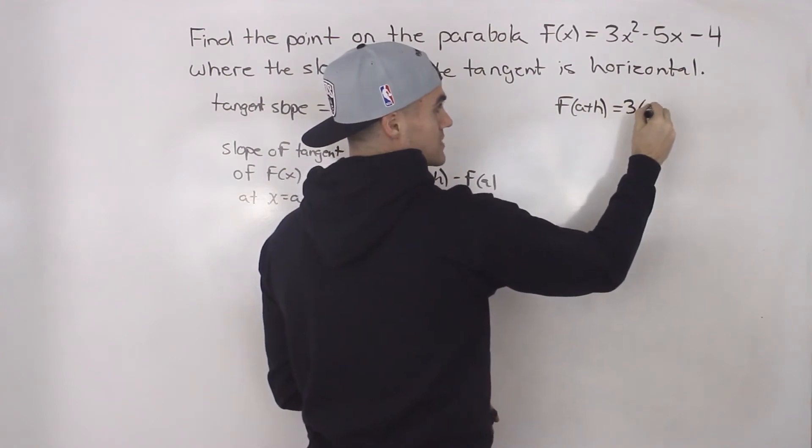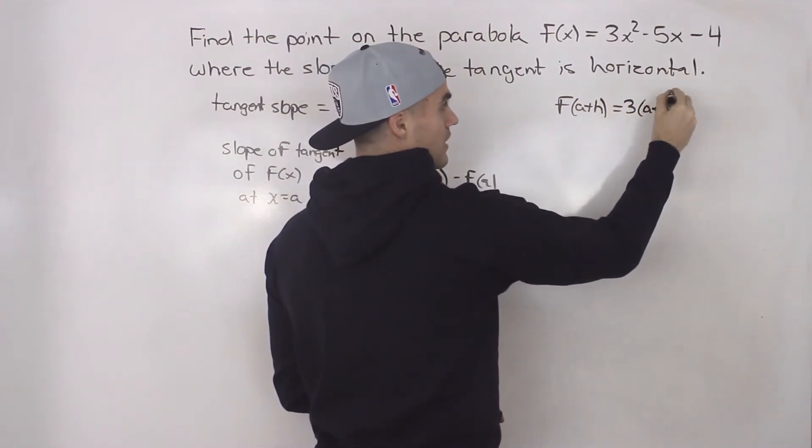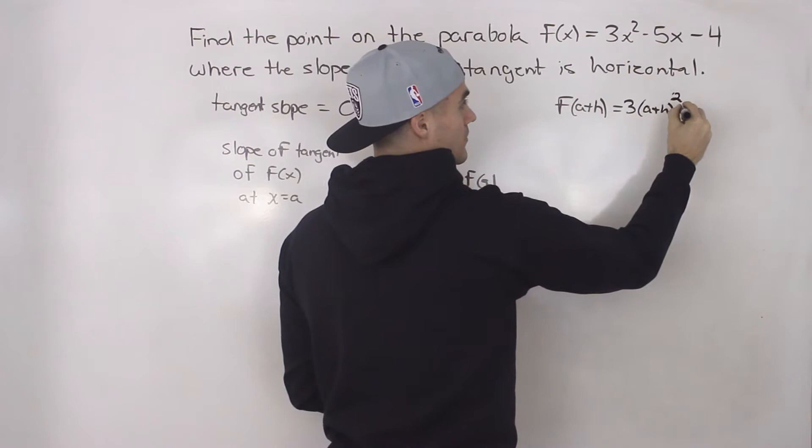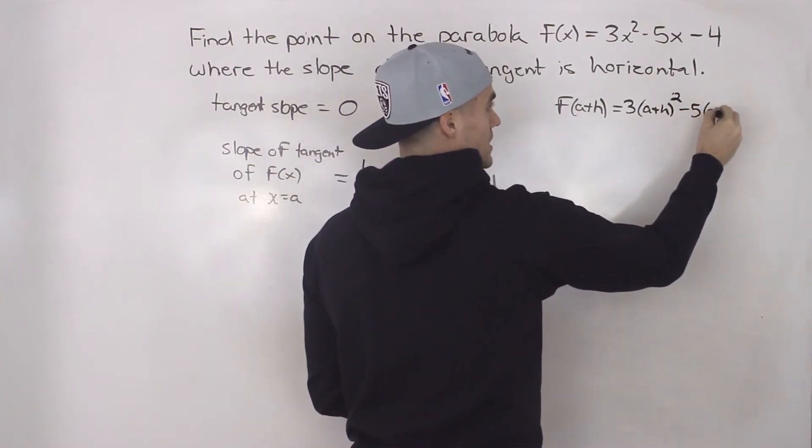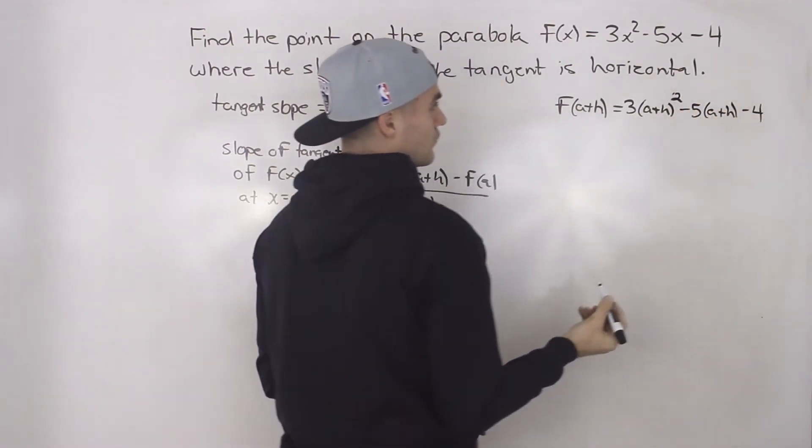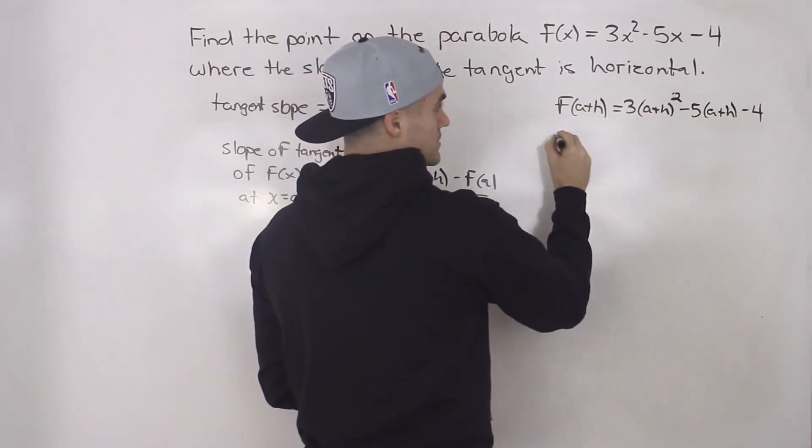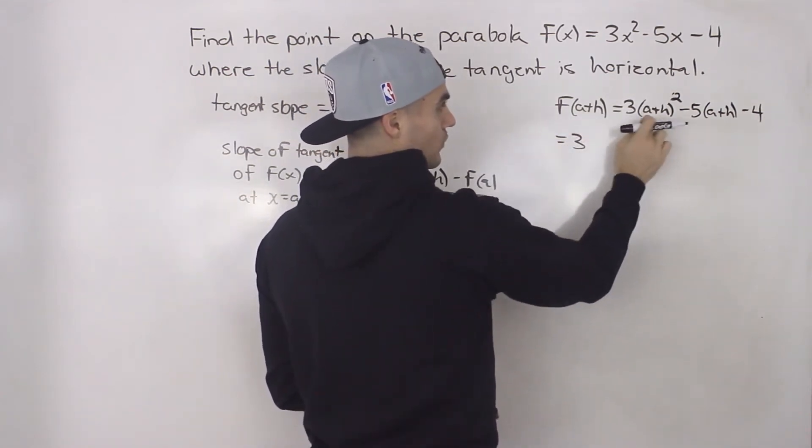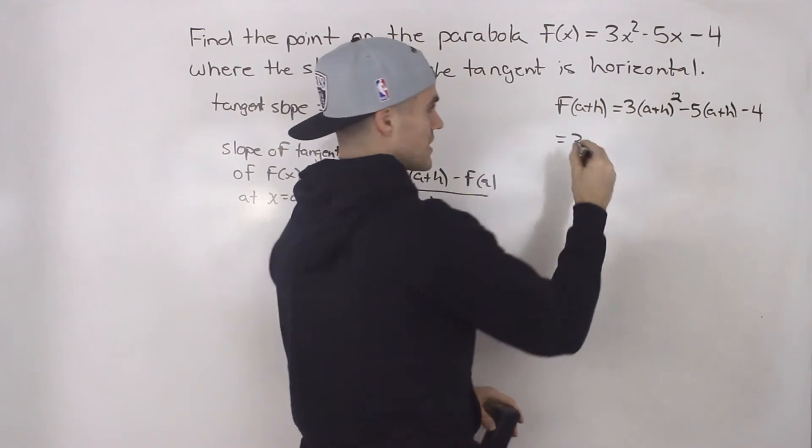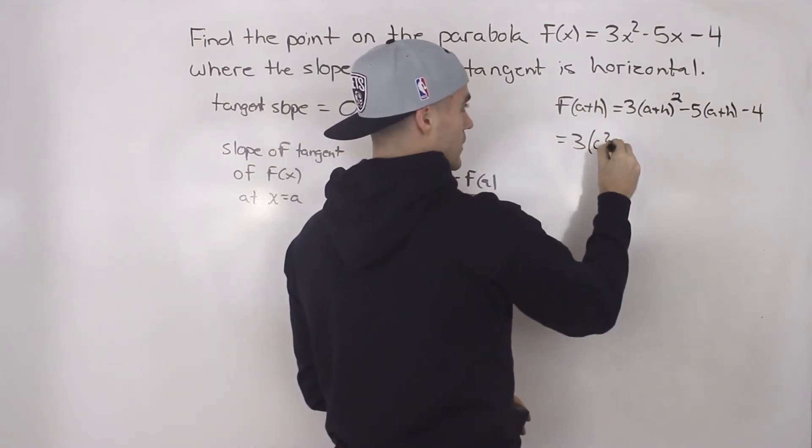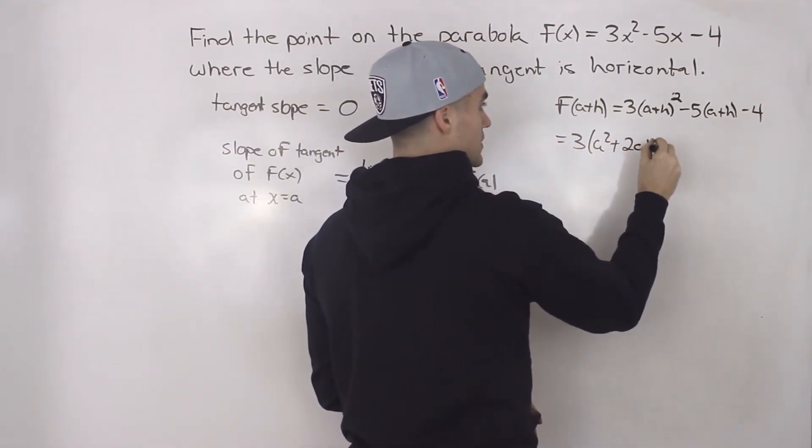So we'll have 3(a + h)² - 5(a + h) - 4. We're going to have to FOIL this out, a + h times a + h. That would give us a² + 2ah + h².